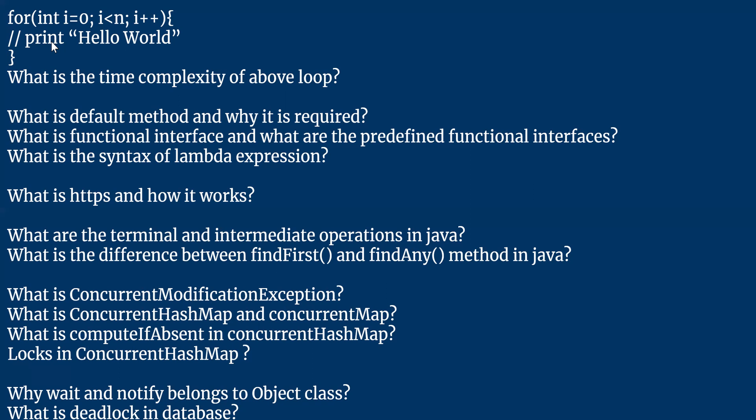There are two things: ConcurrentHashMap and ConcurrentMap — what is the difference? I'm not sure about ConcurrentMap. No problem. There is a method called computeIfAbsent in ConcurrentHashMap. What is its use? computeIfAbsent checks whether the key is available. If the key is already in the map, it doesn't put a new entry. But if the key is absent, it will compute or execute the function provided for that value and put the key and computed value into the ConcurrentHashMap.